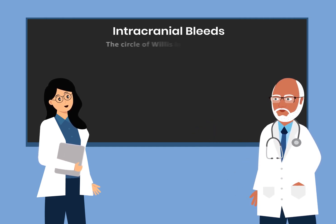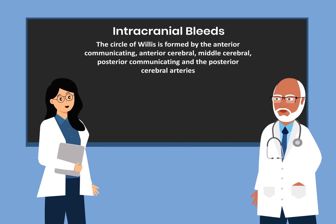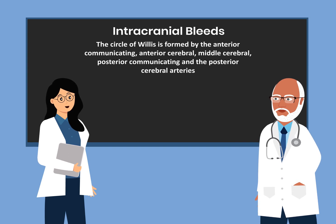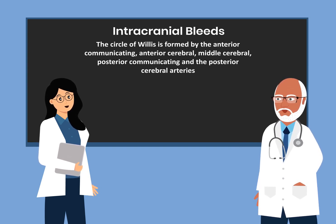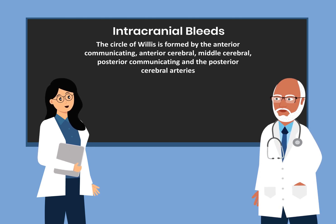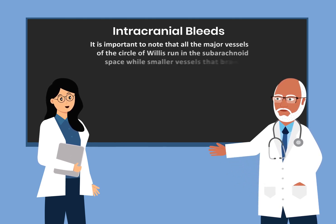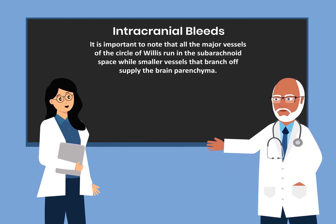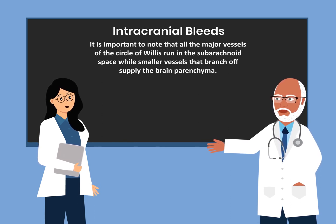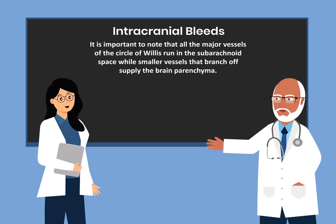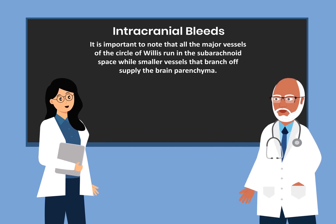The circle of Willis is formed by the anterior communicating, anterior cerebral, middle cerebral, posterior communicating, and the posterior cerebral arteries. It is important to note that all the major vessels of the circle of Willis run in the subarachnoid space, while smaller vessels that branch off supply the brain parenchyma.